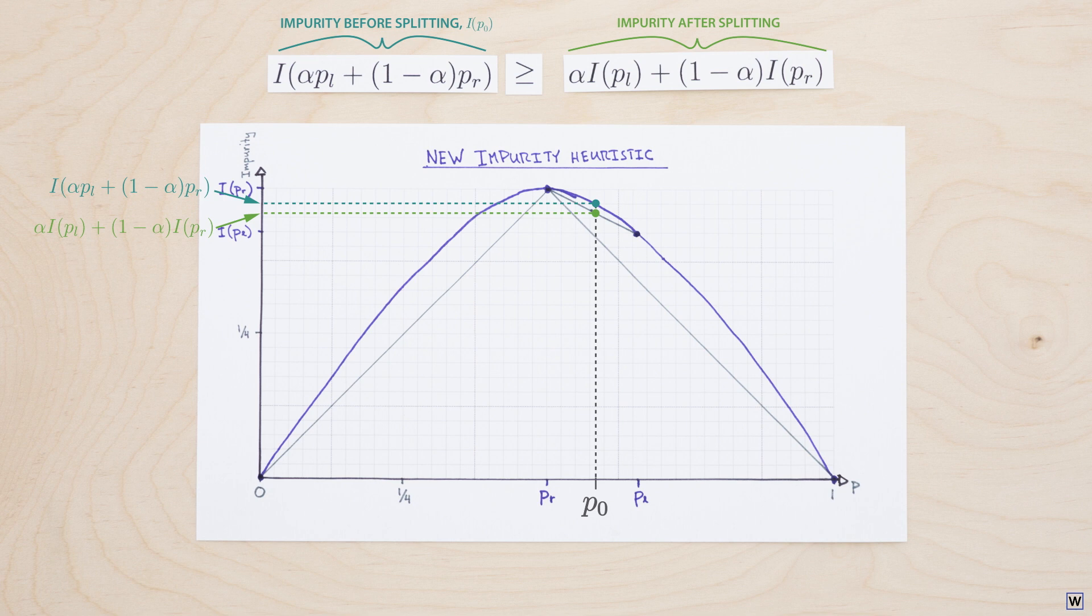We decided last time that we still wanted our impurity function to equal zero for completely pure nodes. That is when p, our positive class fraction, equals zero or one. And that our impurity function should reach a maximum when p equals one-half.